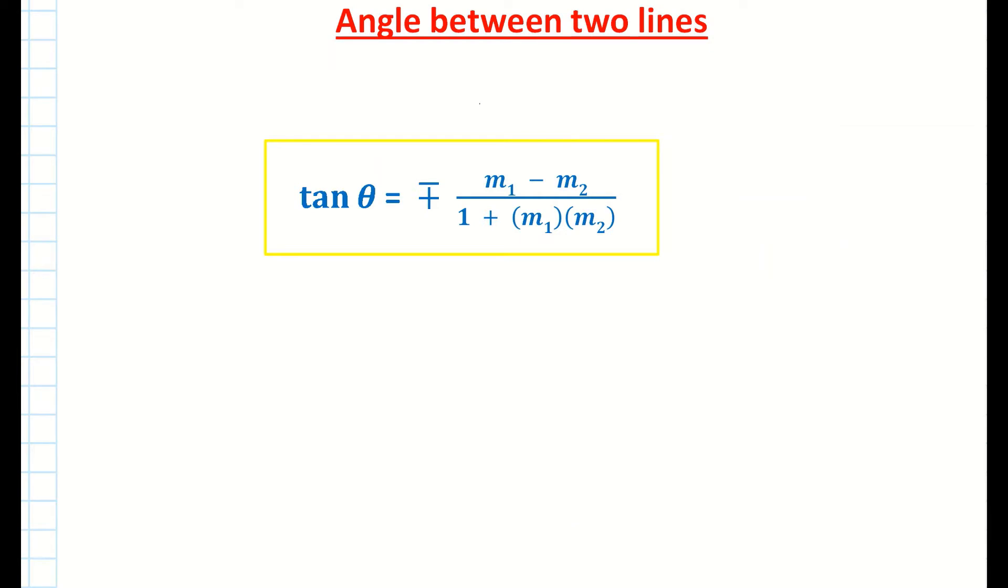This is the formula for finding the angle between two lines. They're using the symbol theta here to represent an angle. This is in your log tables on page 19 also. And what you need here is you need to be able to find the slope of an equation of a line.